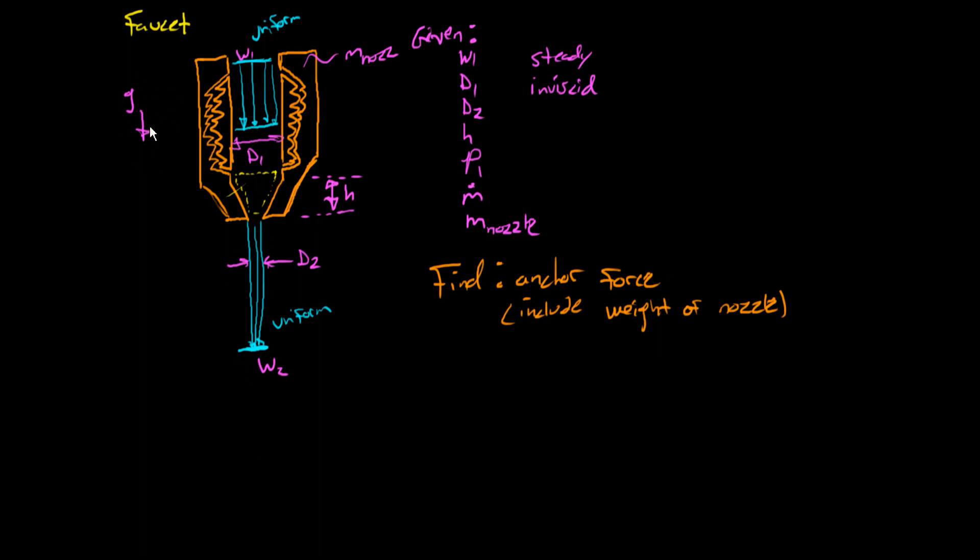Gravity points down and we're given a bunch of information about the geometry and flow rate and things like that. And what we're interested in is finding the force that the water is exerting on this nozzle to see how much we need to push up on it to stop it from getting blasted off.